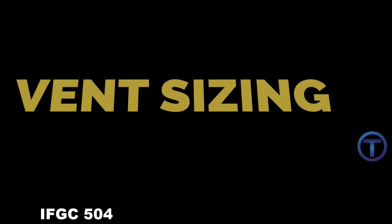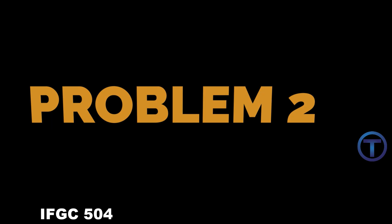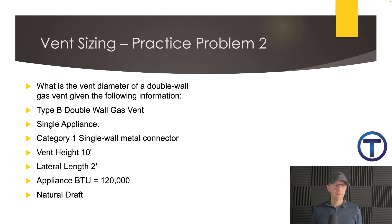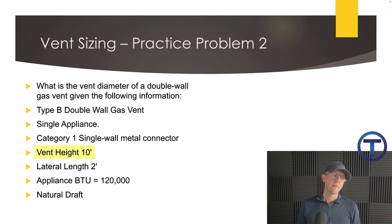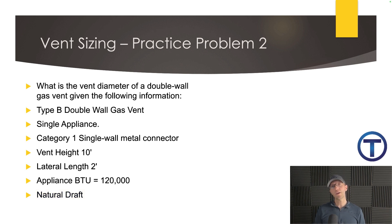Let's do one more. Practice problem two. Let's find the vent pipe for a type B double wall gas vent. We have a single appliance, Category 1, single wall metal connector — that's different than the last one, so we'll be on a different table. The vent height is 10 feet, lateral is 2 feet, appliance BTUs 120,000, and it's a natural draft. Pause the video here, try and find the table you should be using, figure out which size you'll be using, and we'll go from there.